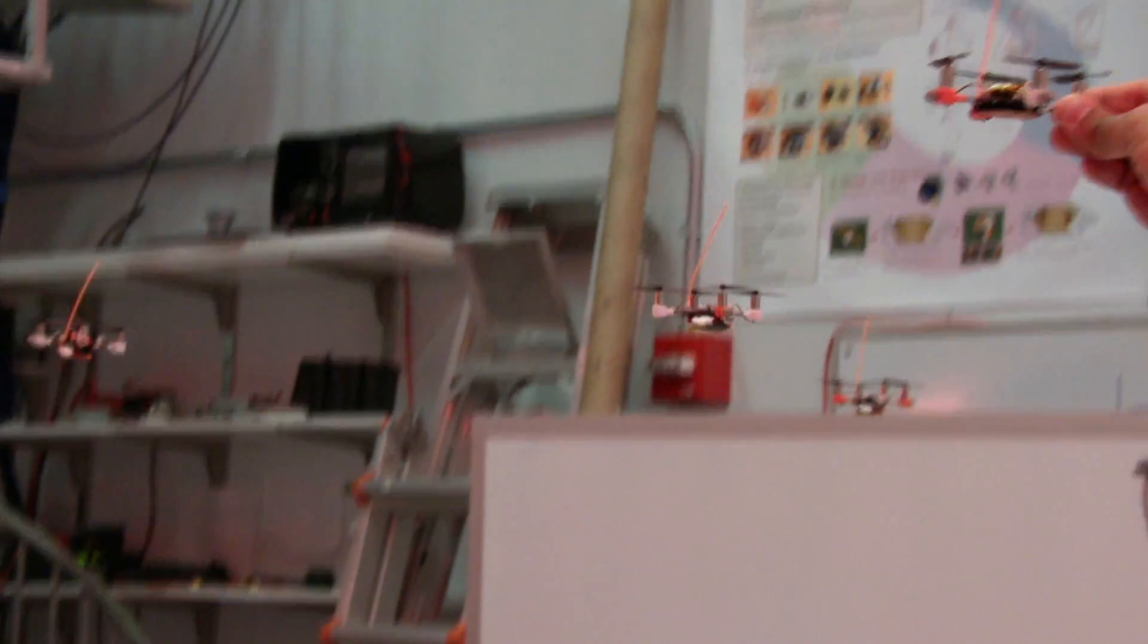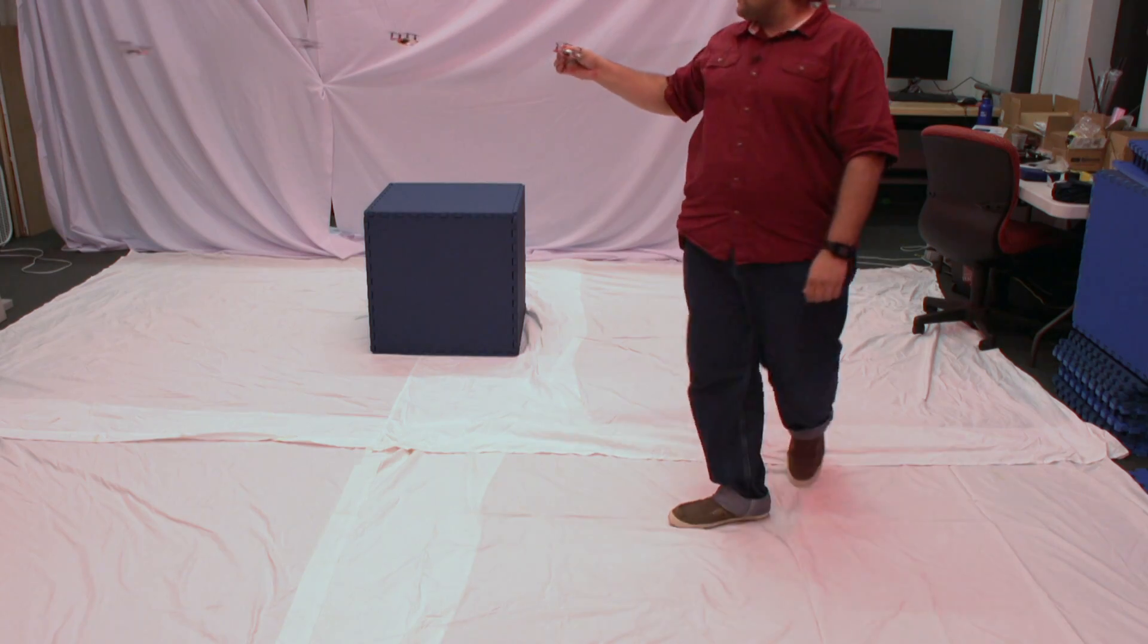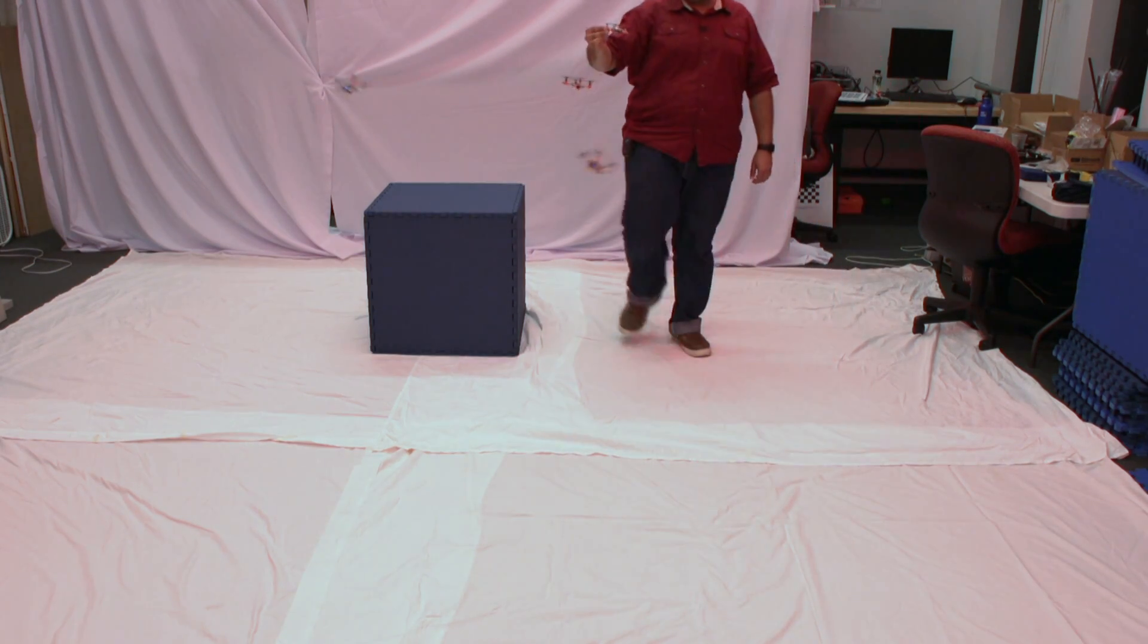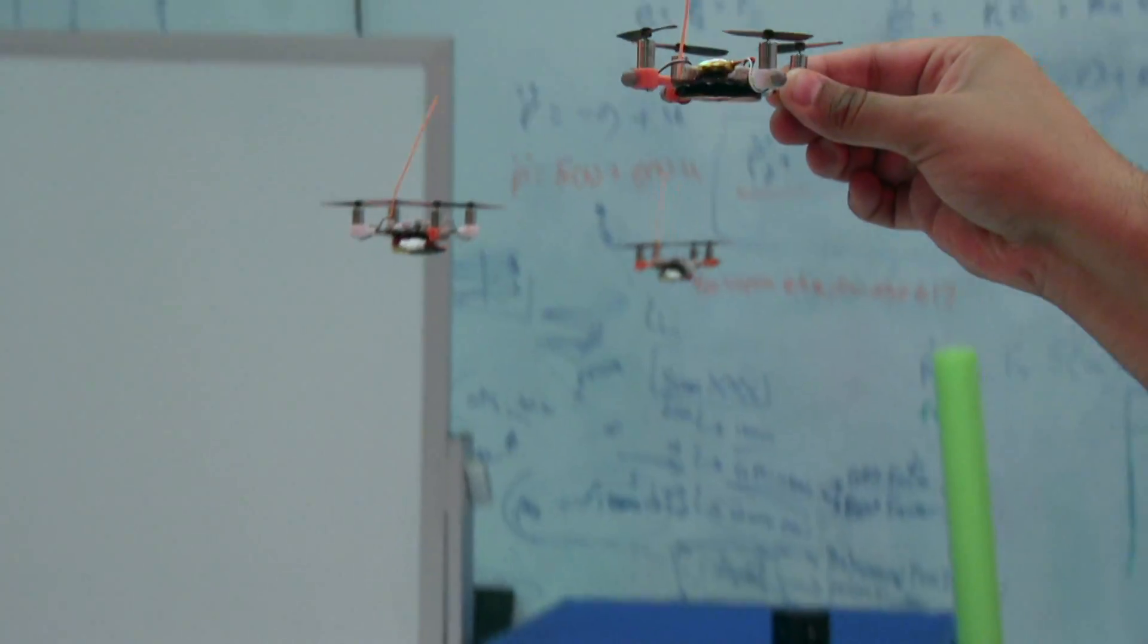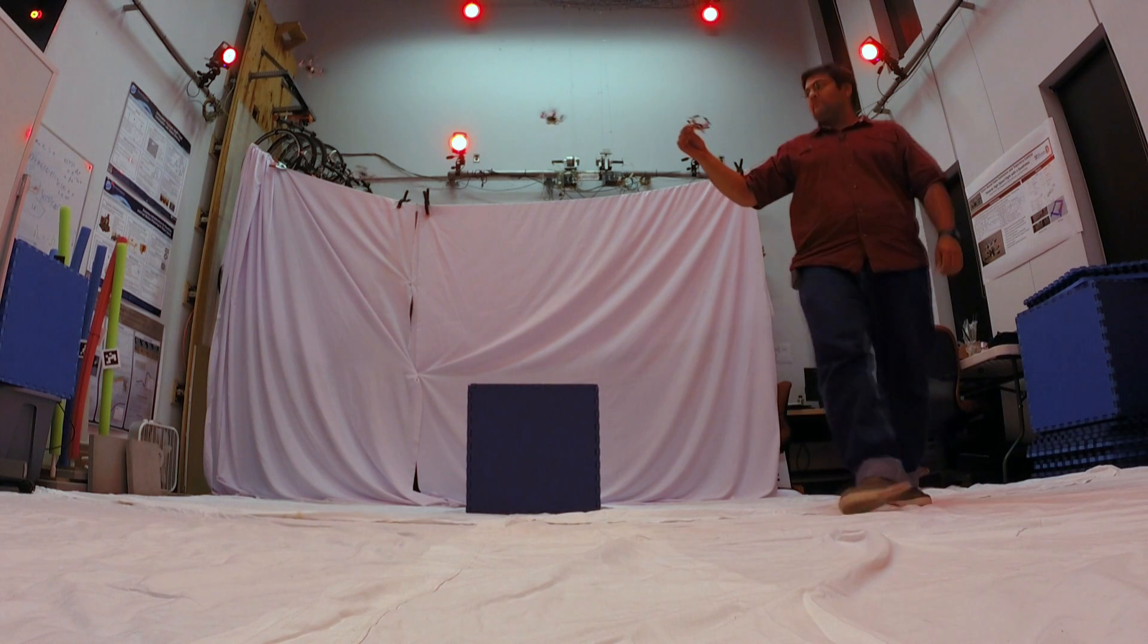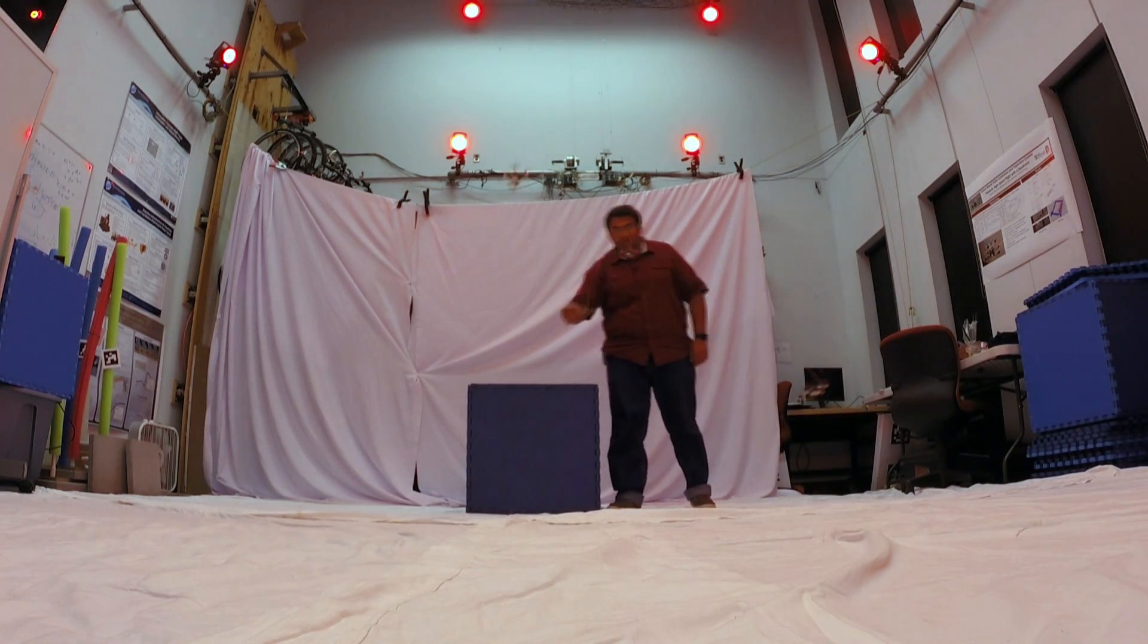We basically specify a formation that three followers need to maintain at all times and the task is to follow the leader in the sense that wherever the leader moves the formation must maintain a certain distance away. If the leader rotates or turns left and right the formation would rotate around the leader.